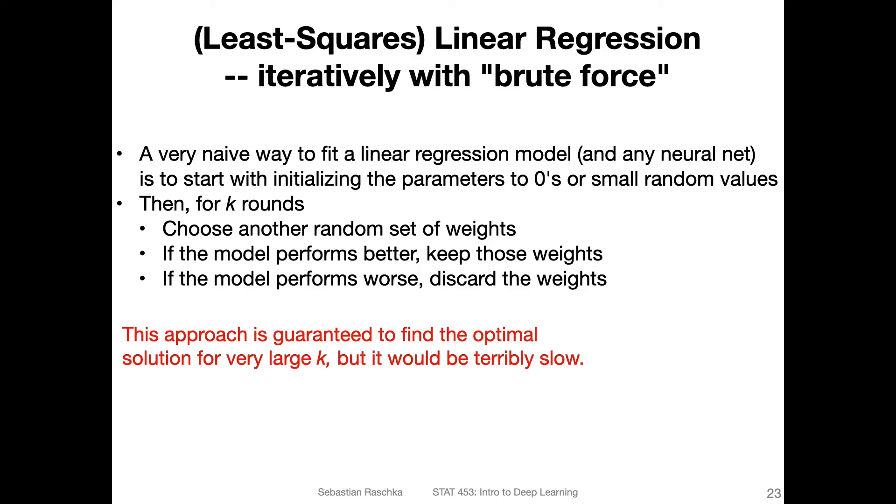One way we can use an iterative algorithm to fit least squares linear regression models is by using brute force. This would be what I think of as a very naive way to fit a linear regression model, or any type of neural network. What we can do is start by initializing parameters to all zeros, the weights and the bias, or small random numbers. And then we have a for loop here for k rounds.